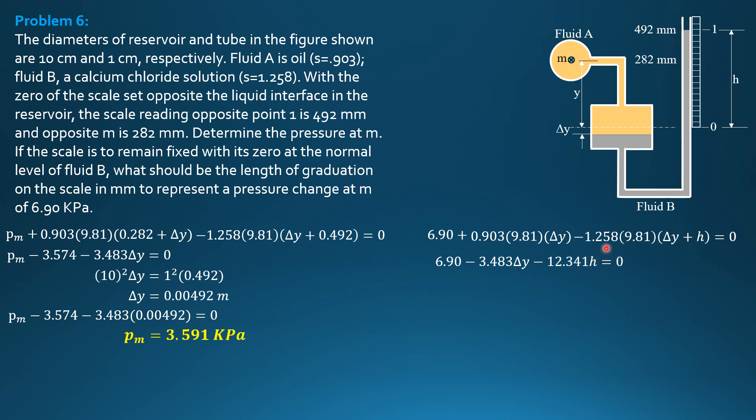Let's relate delta Y with H. Again, 10 squared delta Y equals 1 squared H. So that means delta Y is 0.01 of H.